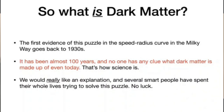This is an old puzzle — it goes back to the 1930s. The speed-radius curve was first discussed in the 1930s, and the data has been refined since then, but it's been almost 100 years and no one has any clue what dark matter is made of even today. That's how science is — it might take a century or more to figure out the right answer to certain problems. It's really fundamental: it's 26% of the universe and we don't know what it is. Several smart people have spent their whole lives trying to solve this puzzle, and there's just no luck.